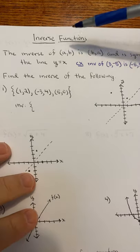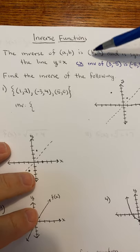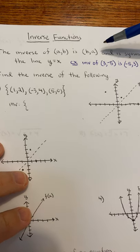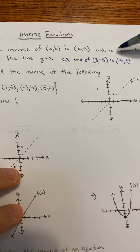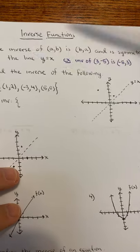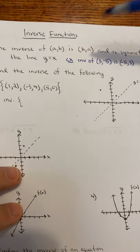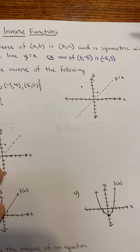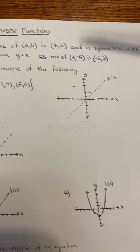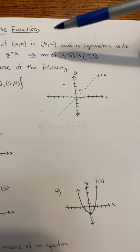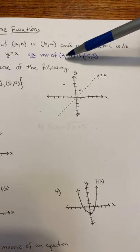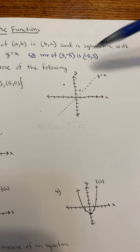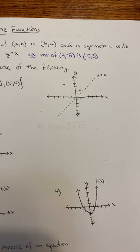The inverse of a point AB is BA, and is symmetric with the line y equals x. So an example: the inverse of (3, -5) is (-5, 3). You just switch the x and y — that's the inverse.